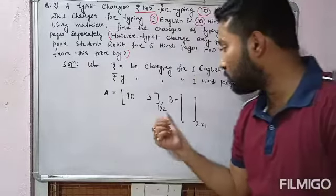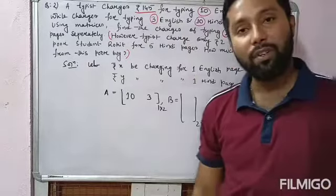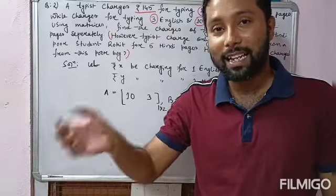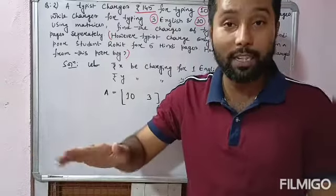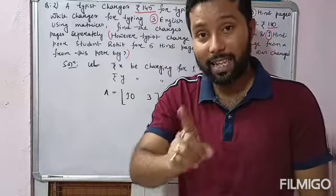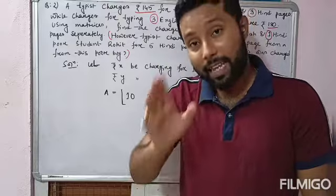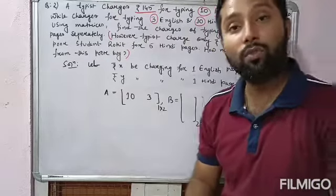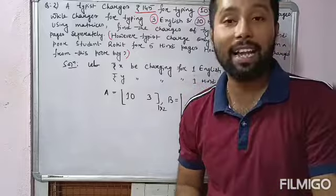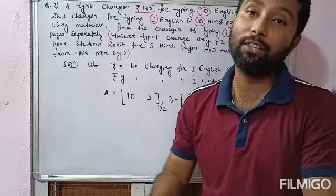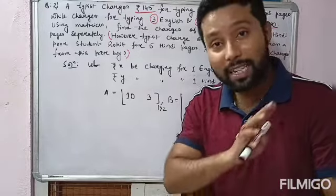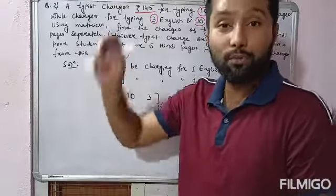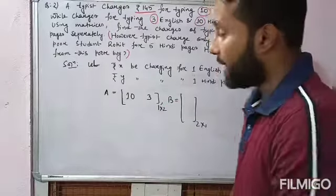You might ask why we multiply and not add. Because addition requires matrices of the same order — these have different orders so addition is not possible. The reason for multiplication: if one English page costs rupees x, then 10 English pages cost 10x — that is multiplication. So we always multiply in this type of model. The order of the resultant is 1×1 only if these two matrices are multiplied.